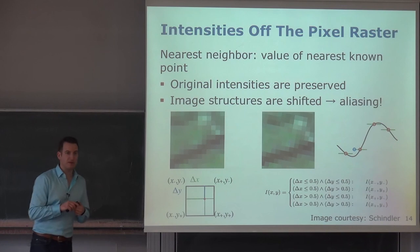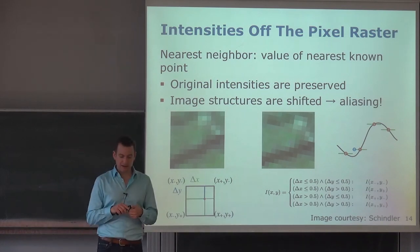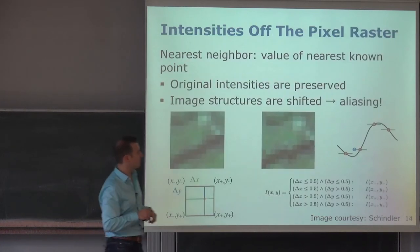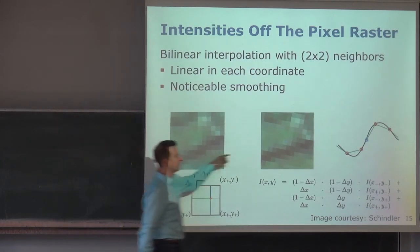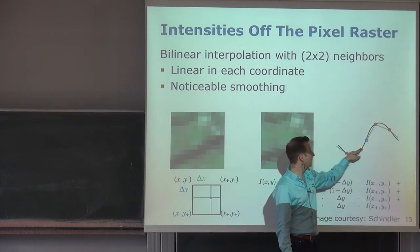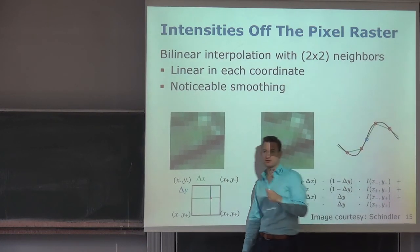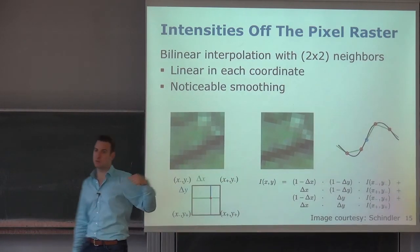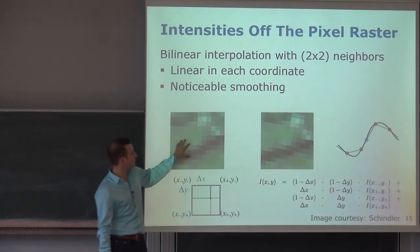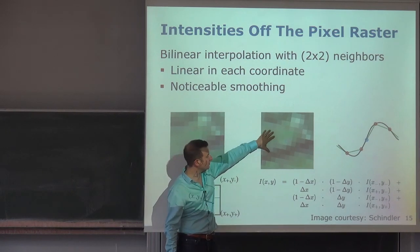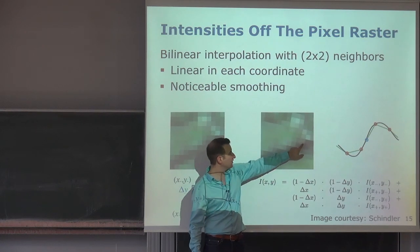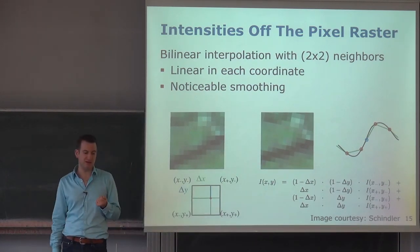Bilinear interpolation approximates the intensity function by a piecewise linear function in x and y. This produces a smoothing effect — the result is smoother than nearest neighbor but you lose some of the crisp edges, and intensity values can be blurred.